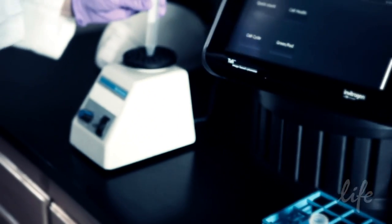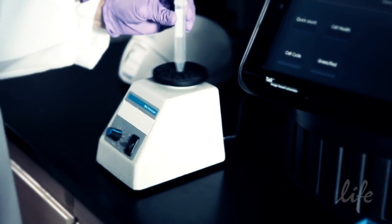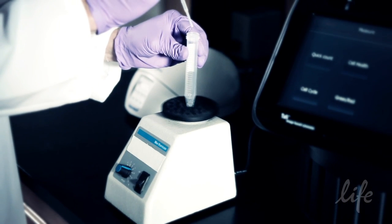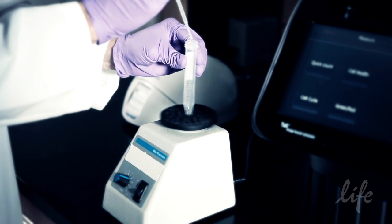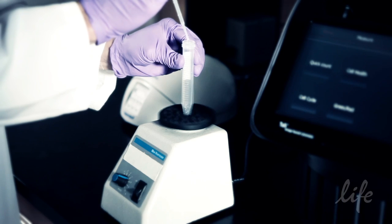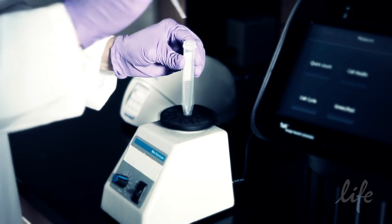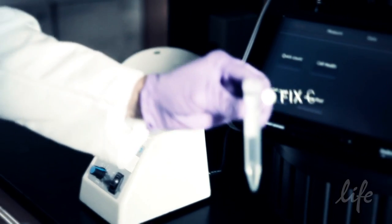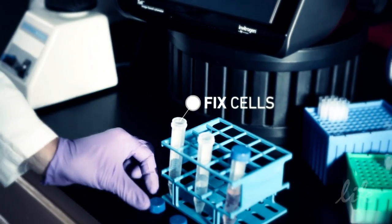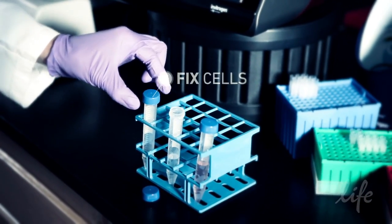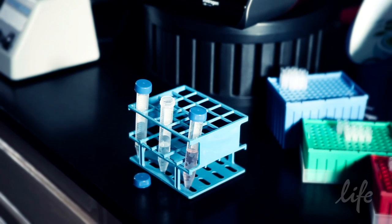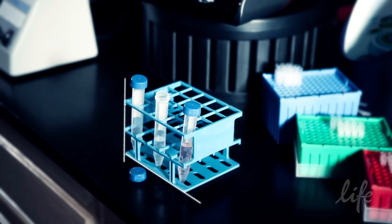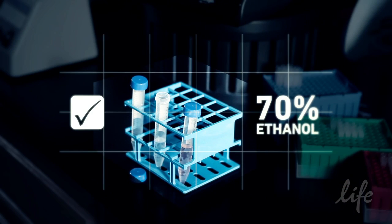To ensure single cell suspension of fixed cells, begin adding 70% ethanol very slowly, dropwise, while gently vortexing. It is very important that cells are fixed into a single cell suspension. Cells tend to clump during the fixation step. The very slow dropwise addition of the initial volume of 70% ethanol, first 1 milliliter, while gently vortexing, will help prevent cells from clumping.